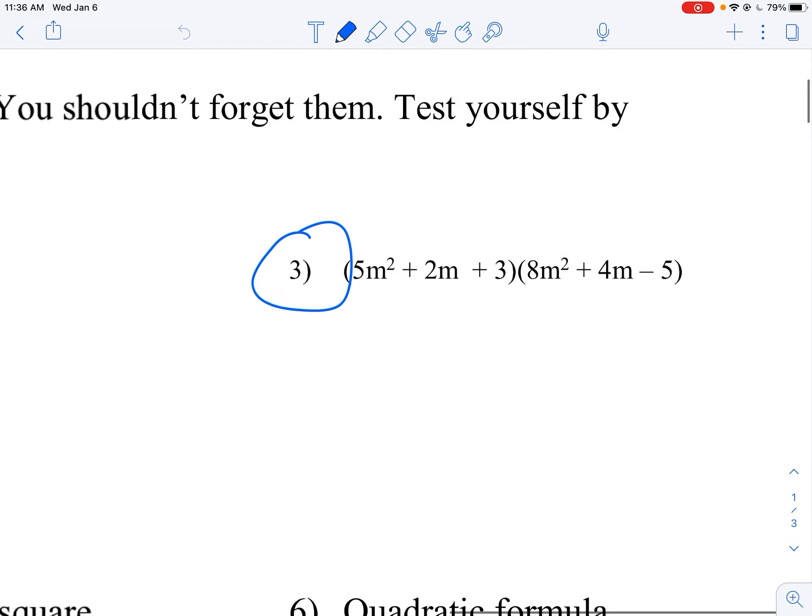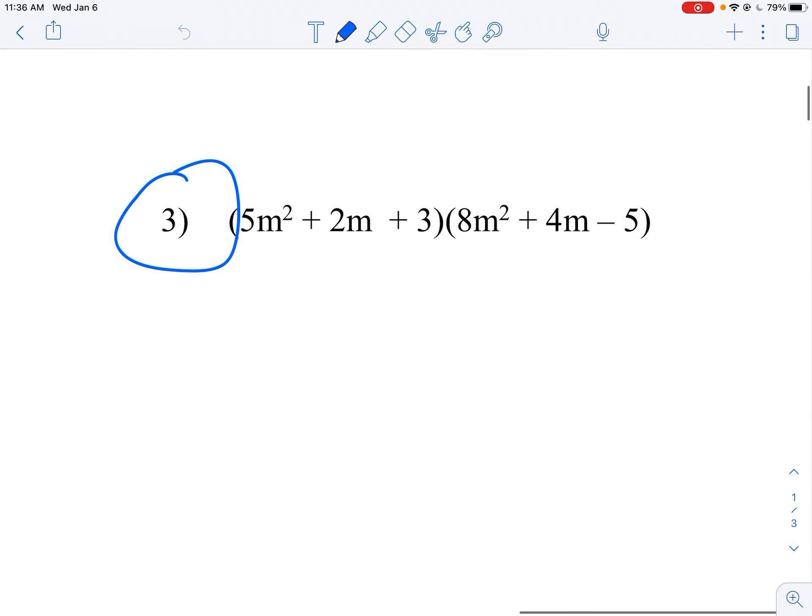Let's look at number three. What you're supposed to do is multiply this and simplify it. To distribute this one, to multiply this, you have to take each of these terms and times by each of these terms. So you've got 5m² times 8m², times 4m, times 5.